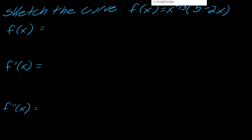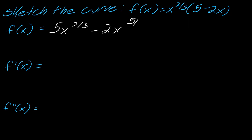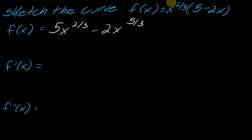Distributing, I get 5x^(2/3) minus 2x^(5/3). Remember, when you distribute, you're adding the exponents — so 2/3 plus 1, or really 2/3 plus 3/3, which is why the second term has exponent 5/3.